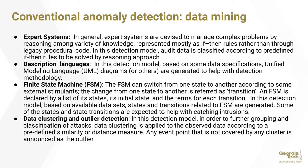The second type of conventional anomaly detection is data mining. These can be expert systems devised to manage complex problems using a variety of knowledge represented mostly as if-then rules, where audit data is classified according to predefined rules solved by reasoning approaches. Second, description language, where based on some data specifications, unified modeling language diagrams are generated to help with the detection methodology. Third, finite state machines, which can switch from one state to another based on external stimulants — the FSM is declared by a list of its states, its initial state, and the terms for each transition, with some states and state transitions expected to help catch intrusions. Finally, data clustering and outlier detection, looking at clustering data based on predefined similarity or distances, where events outside a certain range are considered outliers.